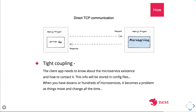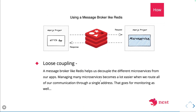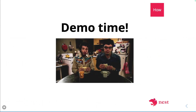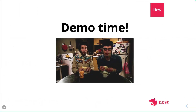Direct TCP communication means service A is tightly coupled with service B because service B needs to respond before service A can reply to the client. In contrast, asynchronous message broker communication — using RabbitMQ, Kafka, SNS, SQS — is loosely coupled. You send an event to the target service and it handles its task independently, without needing to acknowledge the source service synchronously.